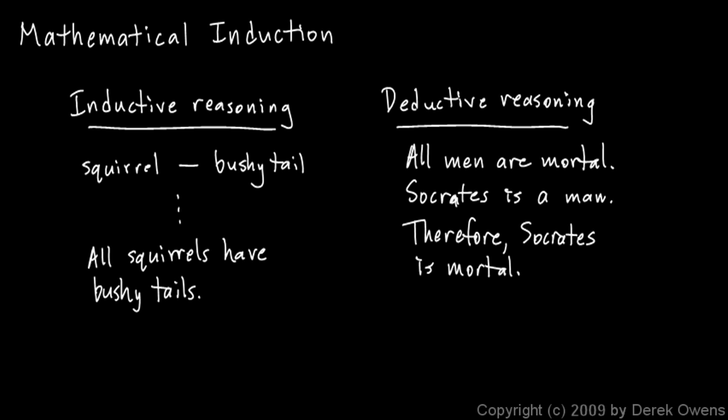Mathematical induction, the technique that we're about to study, is a form of mathematical proof that leads to necessarily correct conclusions. It's not inductive reasoning. Even though it's called induction, it's not inductive reasoning, and it doesn't have the potential fatal flaw that inductive reasoning typically carries with it. Mathematical induction is a rigorous form of logical mathematical proof.